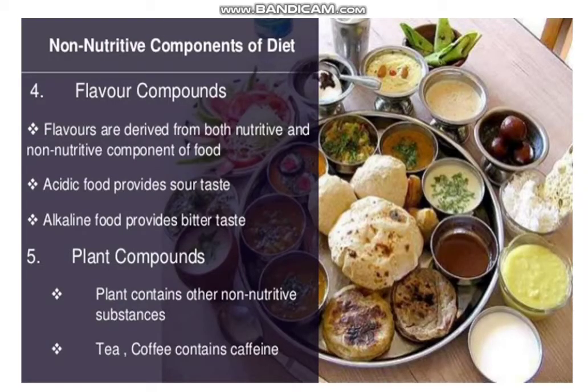The next non-nutritive component of diet is the Flavor component. Flavors are derived from both nutritive and non-nutritive components of food. Acidic food provides a sour taste; alkaline food provides a bitter taste. Plants contain other non-nutritive substances — for example, tea and coffee contain caffeine.